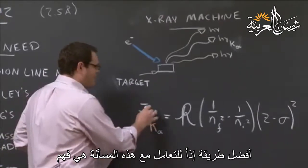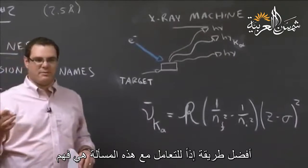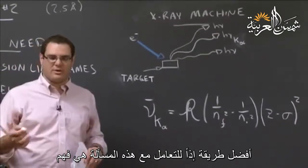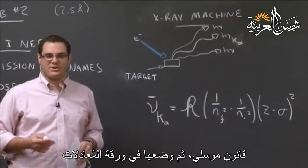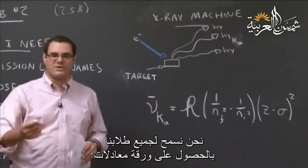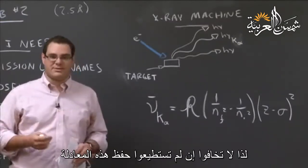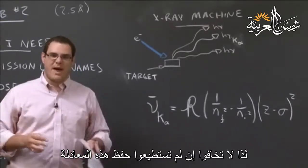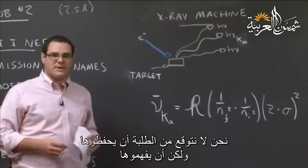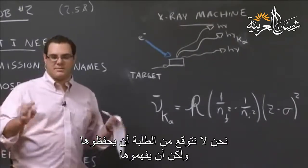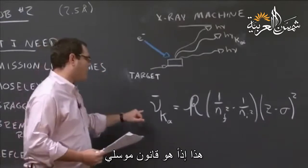The best way to approach this problem is to have Moseley's Law — or understand Moseley's Law — and then have it on your equation sheet. We allow all of our students to have an equation sheet and also a periodic table. So don't panic if you can't memorize this equation. Our students are expected not to memorize it, but to understand it. This is Moseley's Law.